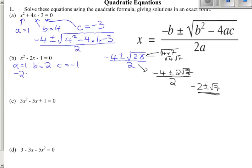Now, filling the numbers in, we've got minus 2 plus or minus the square root of 4 minus 4 times 1 times minus 1, all divided by 2.